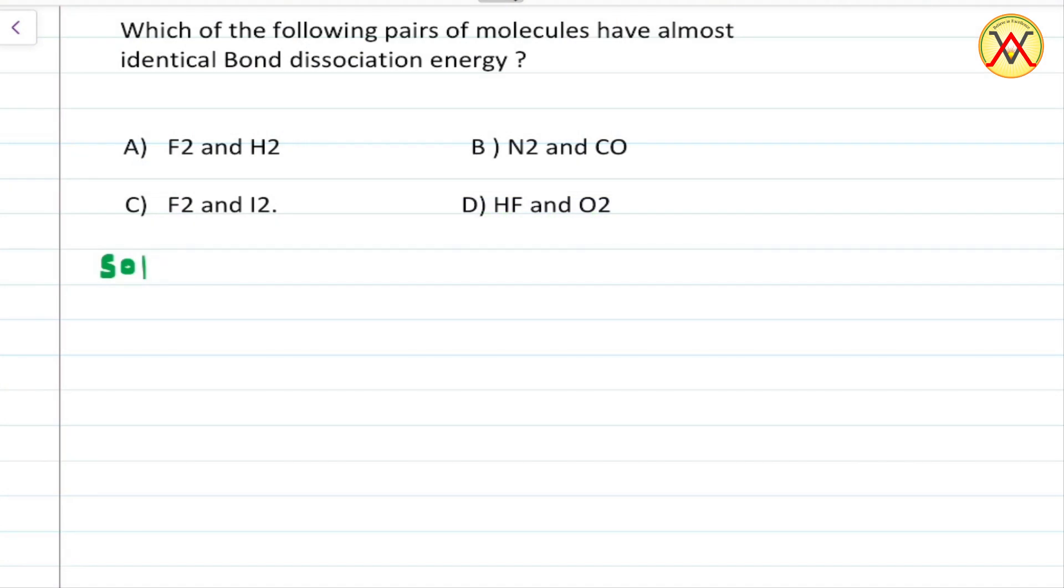Hi students, in this question we have to find out a pair which have almost equal bond dissociation energy considering molecules given in option A. Fluorine has 2p-2p overlapping and hydrogen